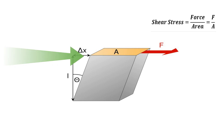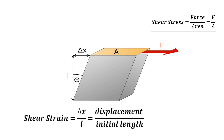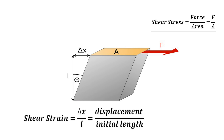When we apply the force F, it displaces one of its surfaces by Δx from its initial position. The shear strain in this situation is equal to Δx divided by L, where Δx is the transverse displacement caused by the force F and L is the initial length. So the shear strain equals Δx divided by L.